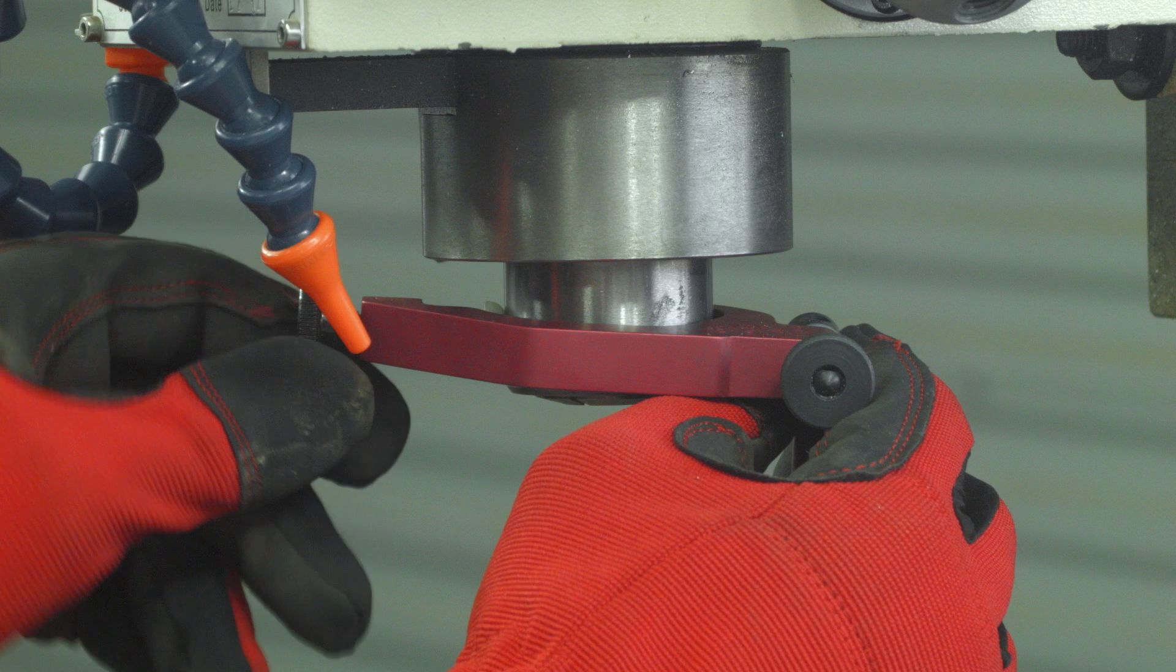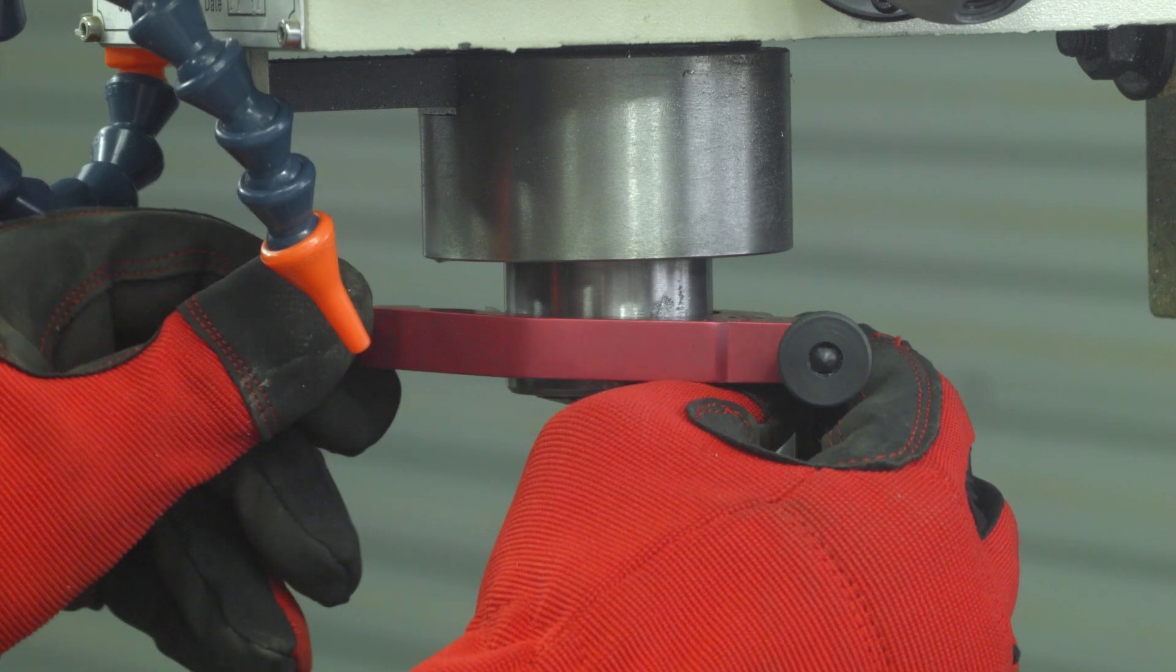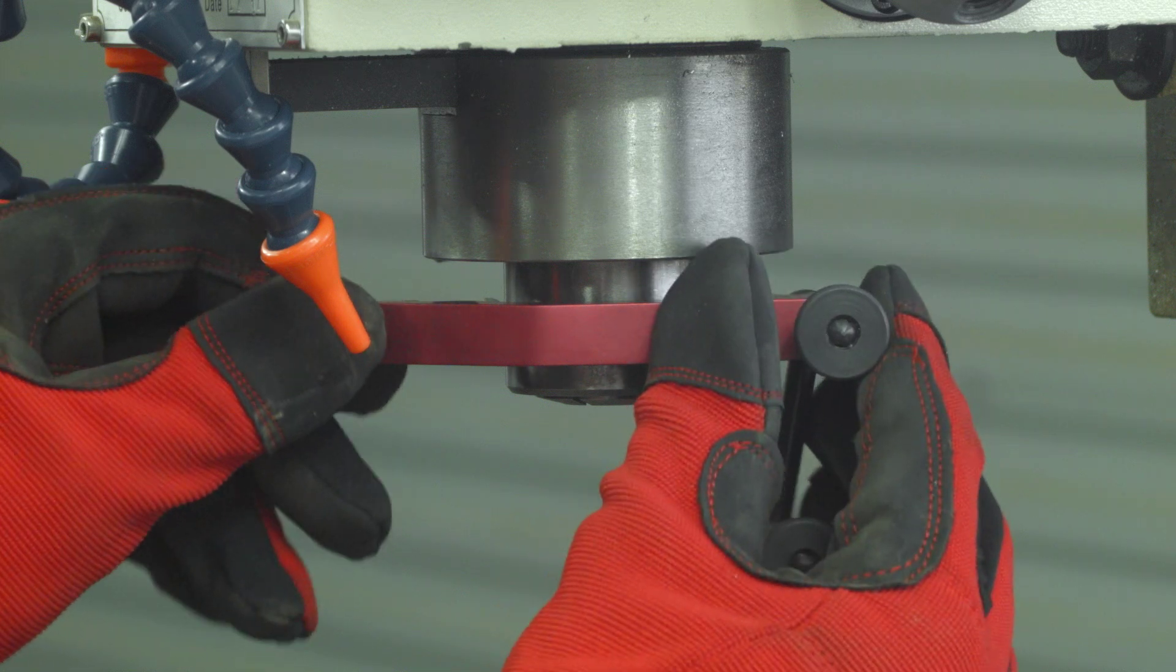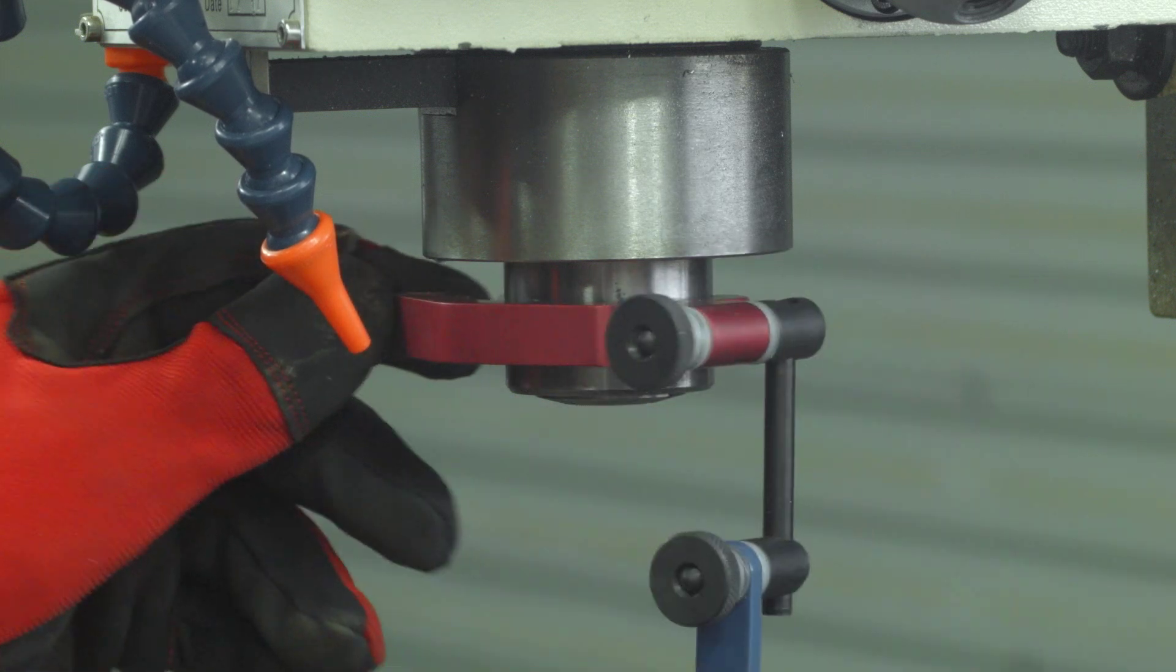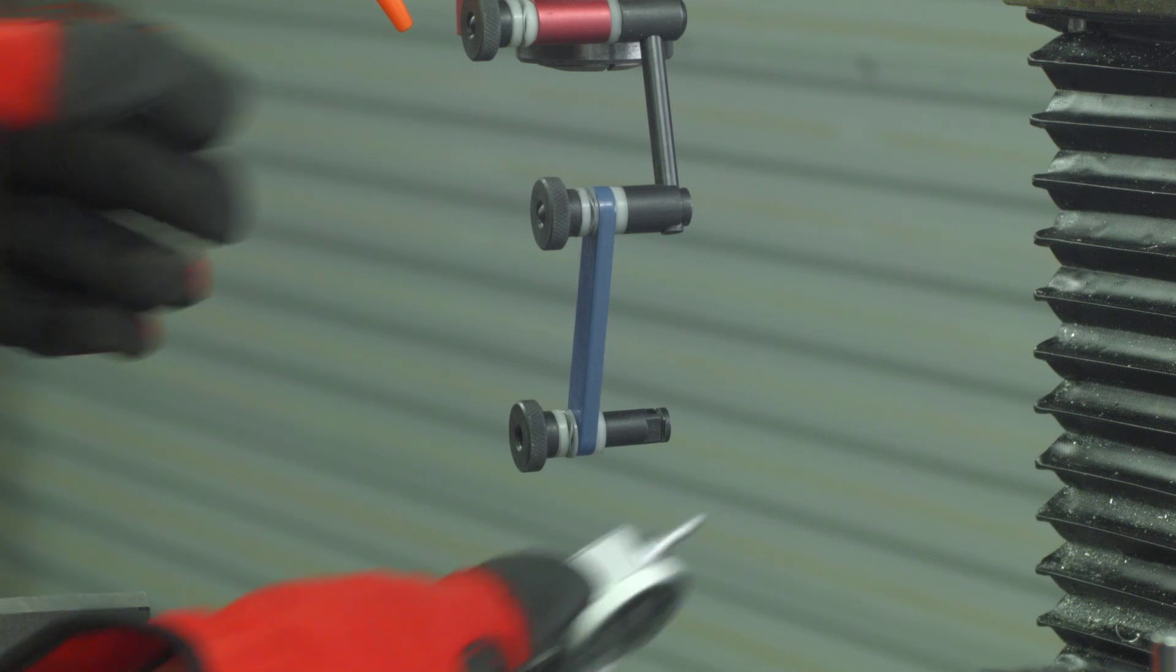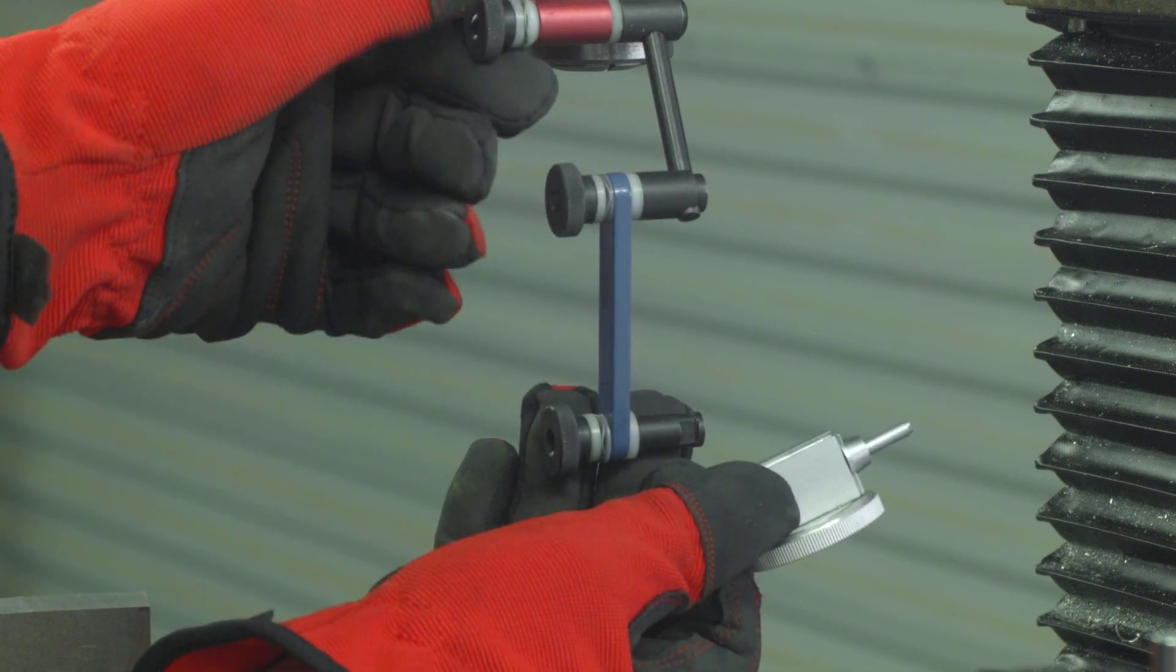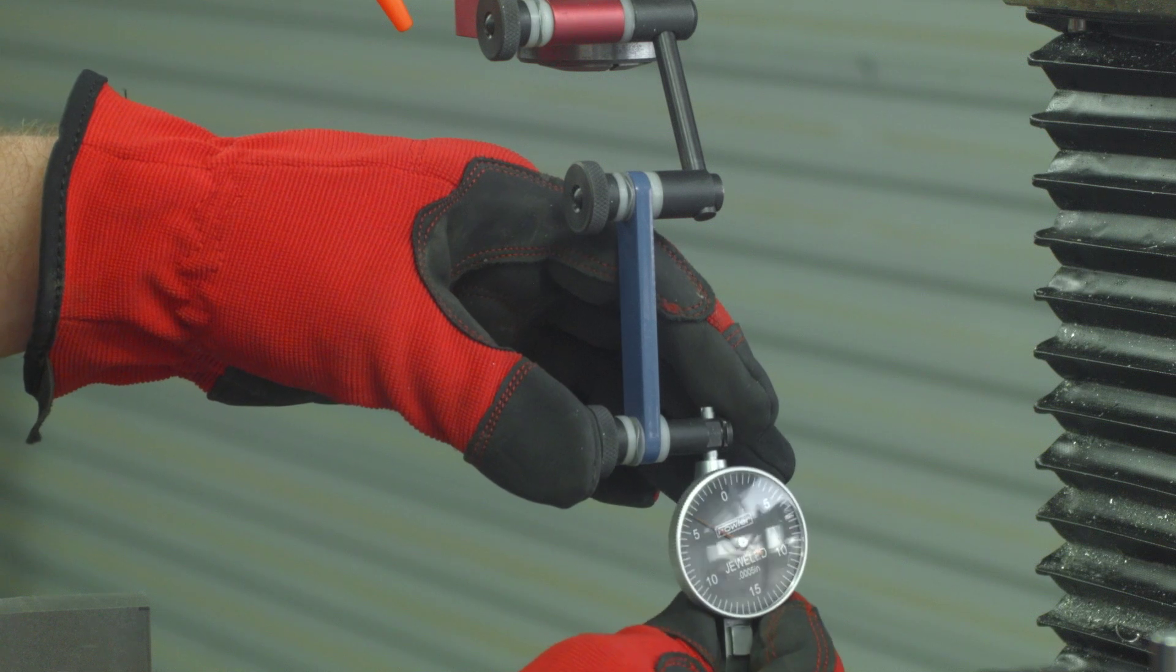Attach the universal indicator mount to the machine spindle. These tools come in a variety of mounts including a magnetic mount. In either case the extra joints in the holder allow us to get the indicator in the correct position. Attach your indicator of choice and tighten the joints down snugly. When the indicator is in its final position lock down the joints.